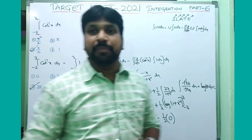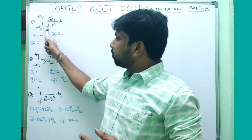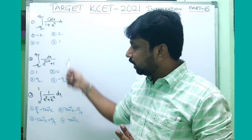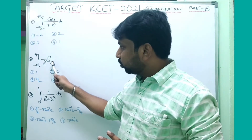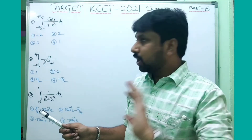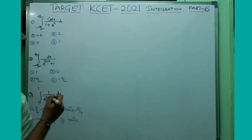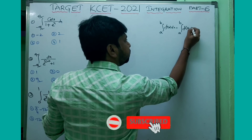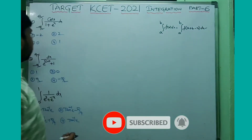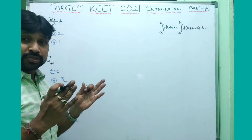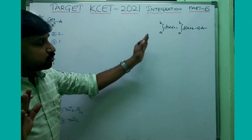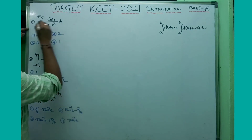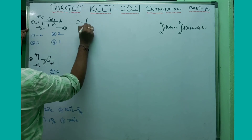Next model: integral from minus π/2 to π/2 of cos x/(1 + eˣ) dx, given in 2020; integral from minus π/2 to π/2 of 1/(e^sinx + 1) dx, given in 2017; and integral from 0 to 1 of 1/(eˣ + e^(-x)) dx, given in 2018. All three are similar model questions. We need to apply the property: integral a to b of f(x) dx = integral a to b of f(a+b−x) dx.